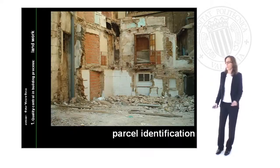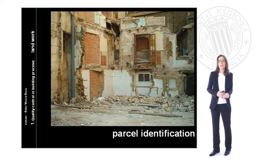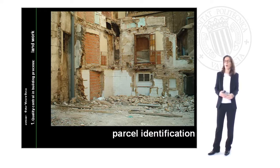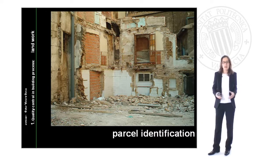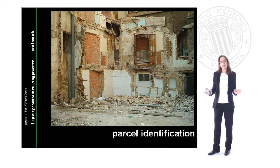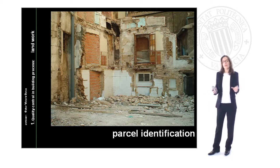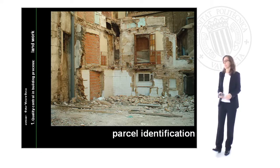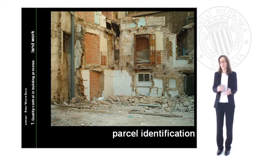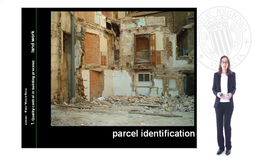In this picture we can identify the parcel inside a building area. In this case we will have a street, a number, and the characteristics of the neighboring buildings that will identify exactly where our parcel is. We can also observe in this picture how our parcel had a previous construction that required demolition.